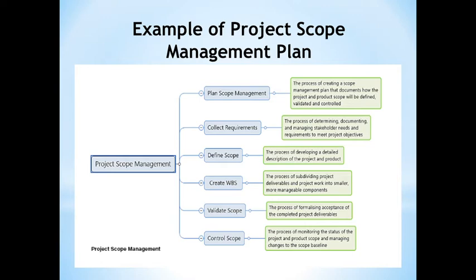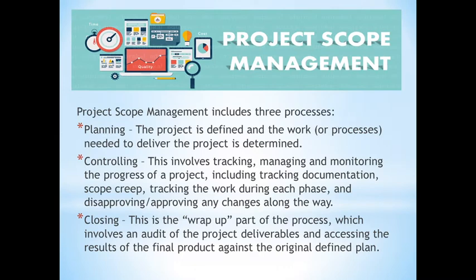Project scope management has three processes: planning, controlling, and closing. Planning is where the project is defined and the work needed to deliver the project is determined. We need to do planning to understand how we are going to carry out the project. After planning and making sure the project is on track, we move to controlling.